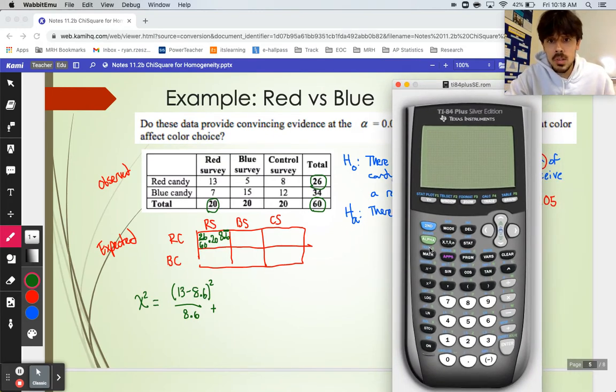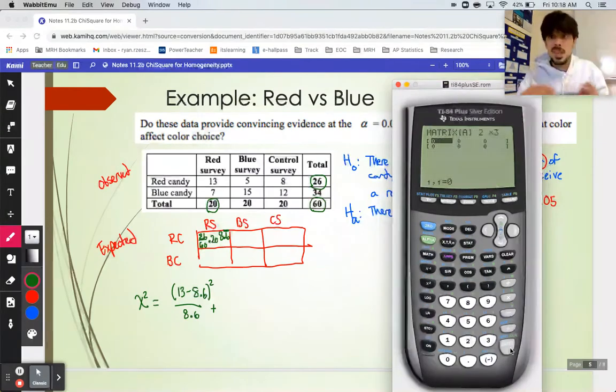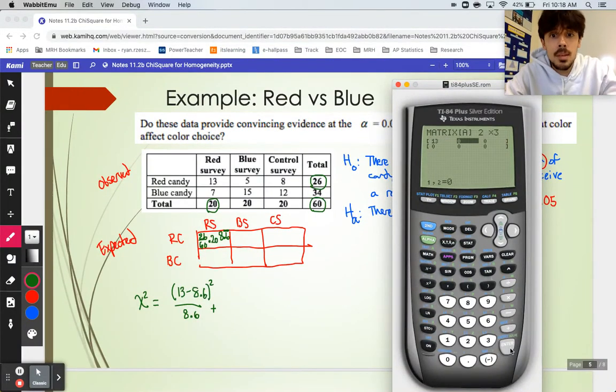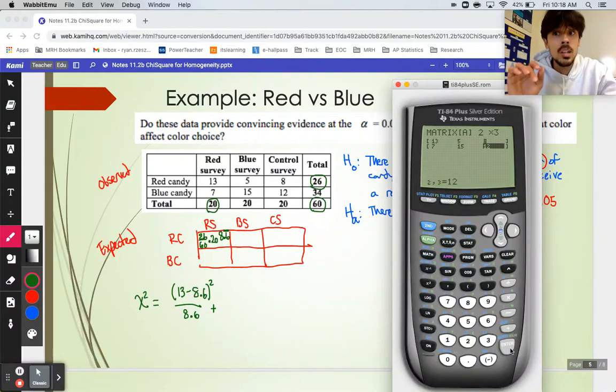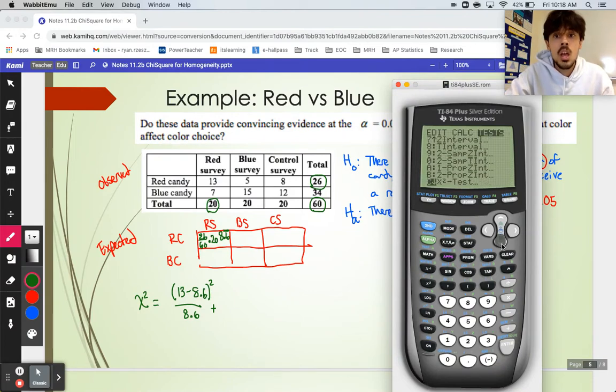Let me pull out my calculator, though, because I want to show you how to get the expected counts off your calculator, which is easier than needing to do them by hand like I've started to do here. So eventually, my game plan is going to be to go to the matrix menu right here. Once in the matrix menu, I'm going to hit edits. On edits, I'm just going to throw it in matrix A. So matrix A is a 2 by 3 matrix, 2 rows, 3 columns. If you can't remember 3 by 2, 2 by 3, just try something and see if it looks like the table. So it does, we're good there. I'm going to type in my observed counts.